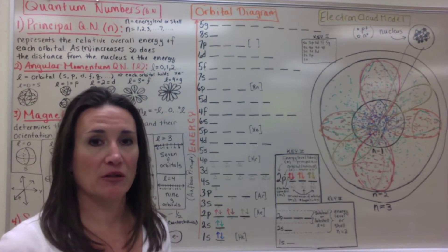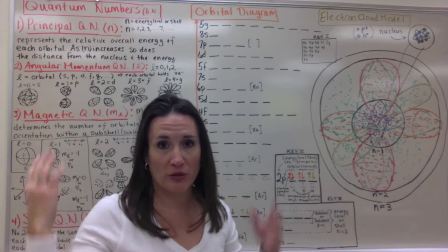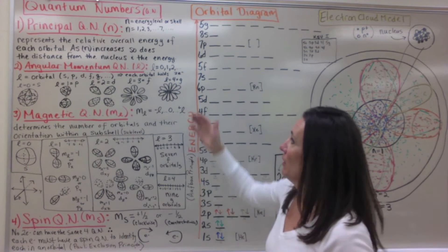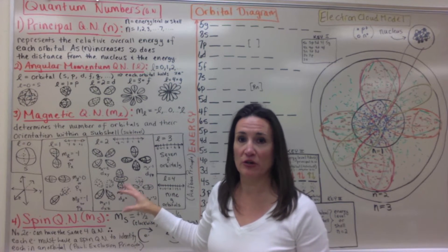In a previous video entitled Quantum Mechanical Model of the Atom, I had you build a foldable with all these notes that you see behind me. The four quantum numbers that help locate an electron around the center of the atom.